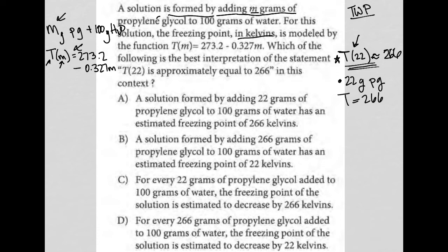So answer choice A says a solution formed by adding 22 grams of propylene glycol to 100 grams of water has an estimated freezing point of 266. This is exactly what I just said, so I'm really loving that answer. But I could be wrong, so I'm going to definitely read the other ones to see if there's something better.